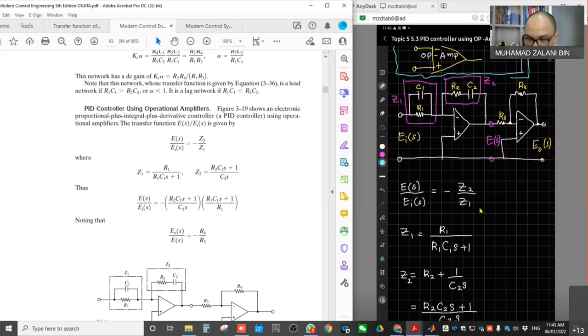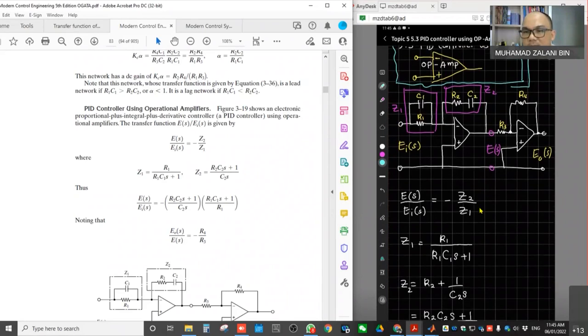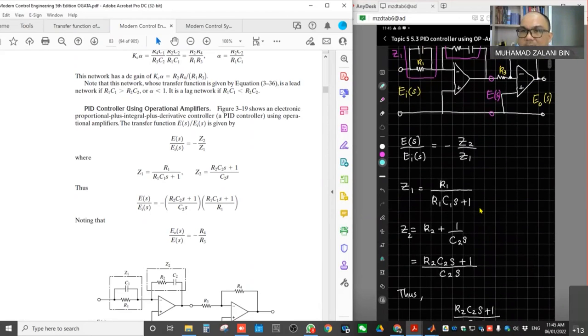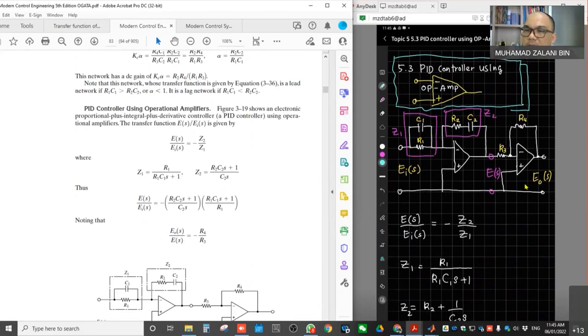Basically, what we need to do here is to determine what is the proportional gain, time constant, integral time, and also derivative time based on this transfer function. We have the output of E0 and input of EI. What we need to do is, as usual, we determine the transfer function of this circuit. To do it, there's one output, one input. But actually there's one more we can define as ES in the middle here. We will calculate this part first.